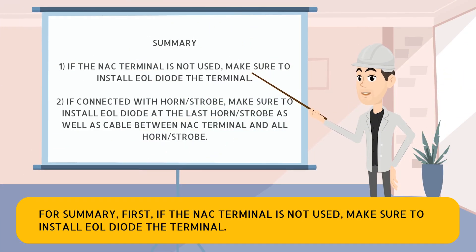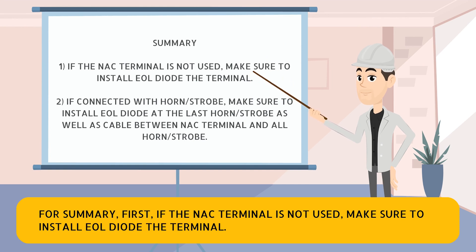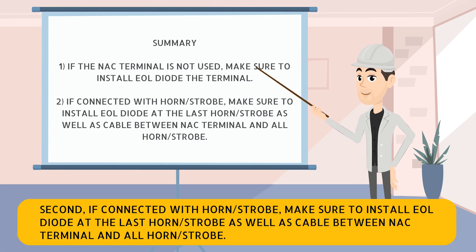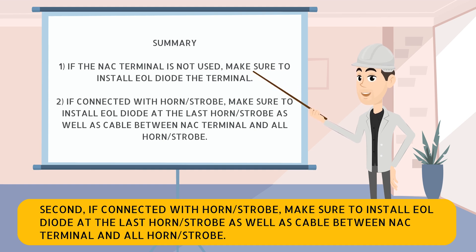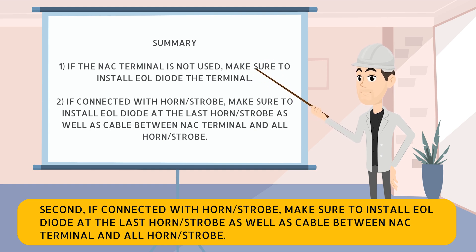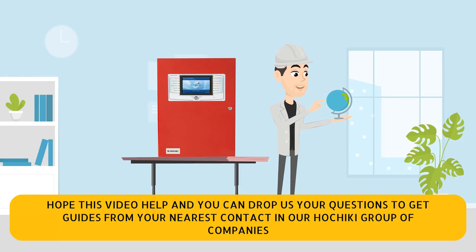For summary: first, if the NAC1 terminal is not used, make sure to install the EOL diode at the terminal. Second, if connected with a horn strobe, make sure to install the EOL diode at the last horn strobe, and ensure the cable between the NAC1 terminal and all horn strobes is intact. We hope this video helped, and you can drop us your questions to get guidance from your nearest contact in our Hochiki group of companies.